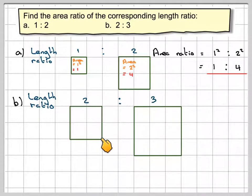The area of this square here is 2 squared which is 4. And the area of this square here is 3 squared which is 9. So we have a length ratio of 2 to 3 but an area ratio of 4 to 9.